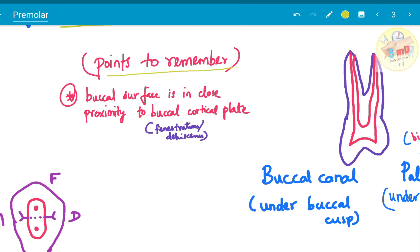The other point to remember is the buccal surface is in close approximation with the buccal cortical plate. Therefore, there is higher chance of fenestration or dehiscence while looking for the canal. If you move like this, there could be a chance that you could perforate the buccal cortical plate. Therefore, keep it in mind.